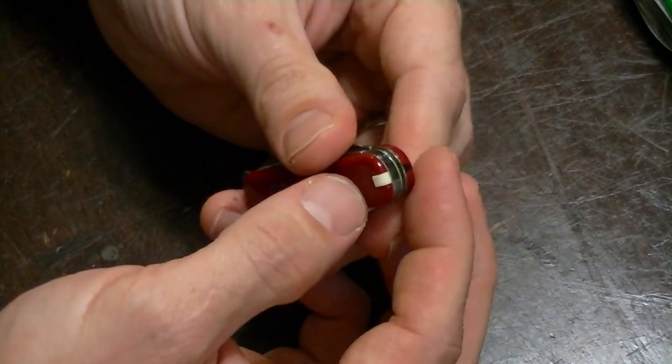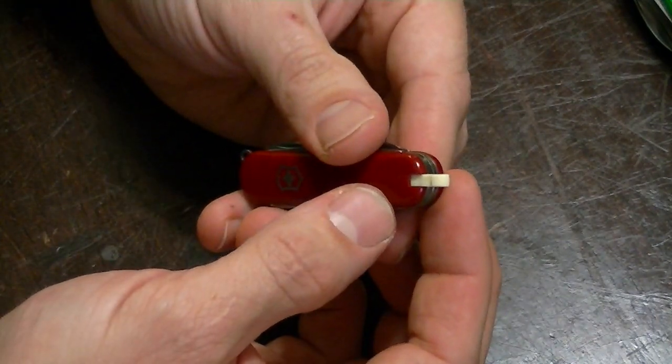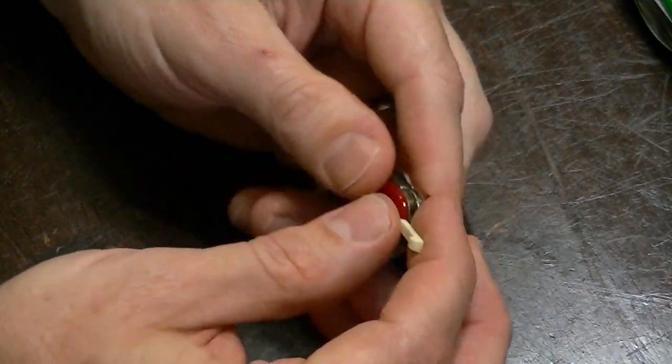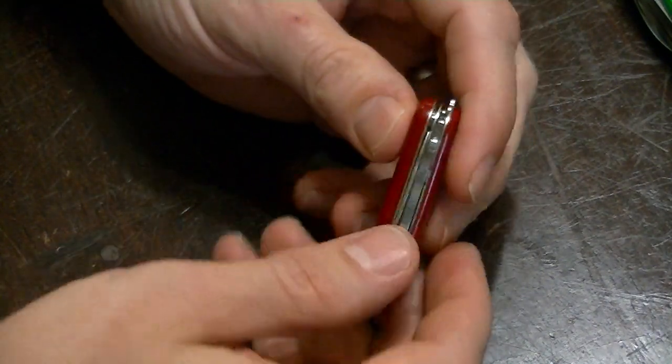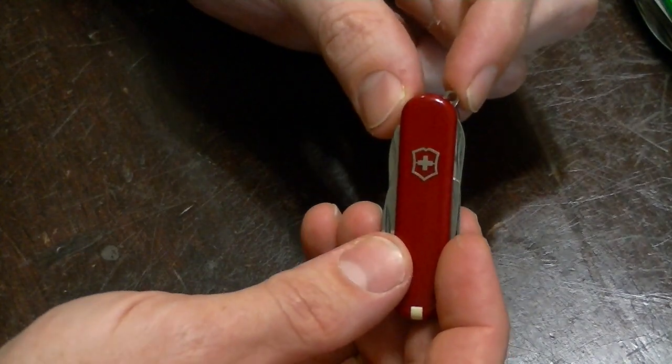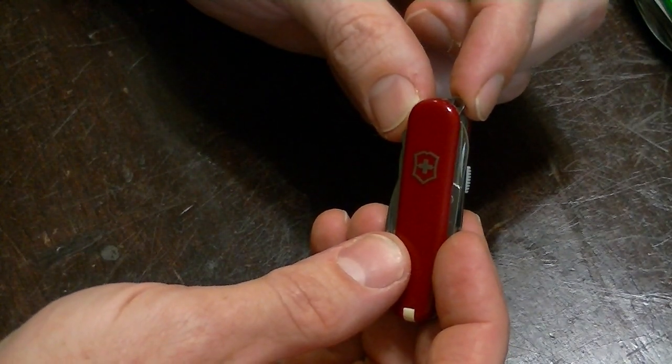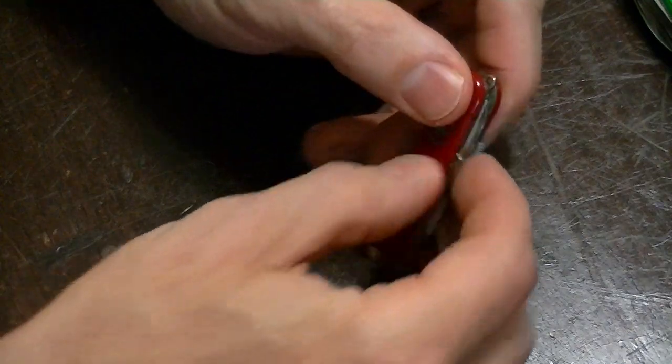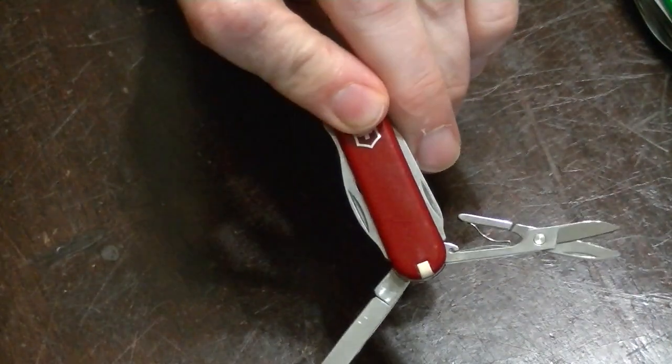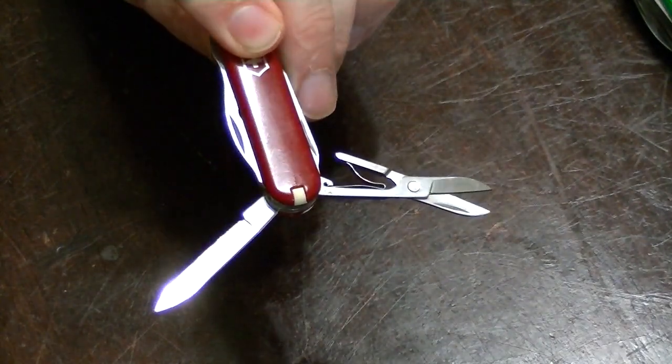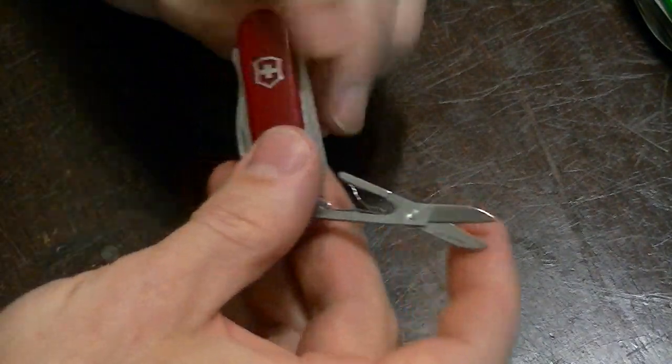And so I replaced the tweezers that it came with, with a toothpick. Because I use that a lot. And one nifty thing about this is that you can see the key ring nub is here. When you have this hanging from your keys in your car, you'll notice that the scissors and the knife blade both open away from the key ring. So that's kind of nice.